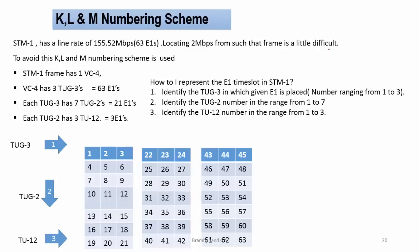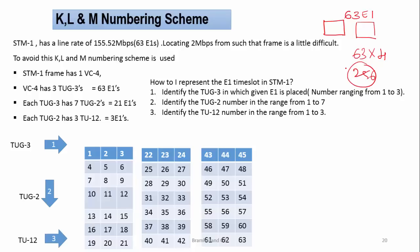In one STM-1 frame, 63 E1s can be multiplexed. For STM-4, 63 × 4 = 252 E1s can be multiplexed and mapped. The STM-1 line rate is 155.52 Mbps.